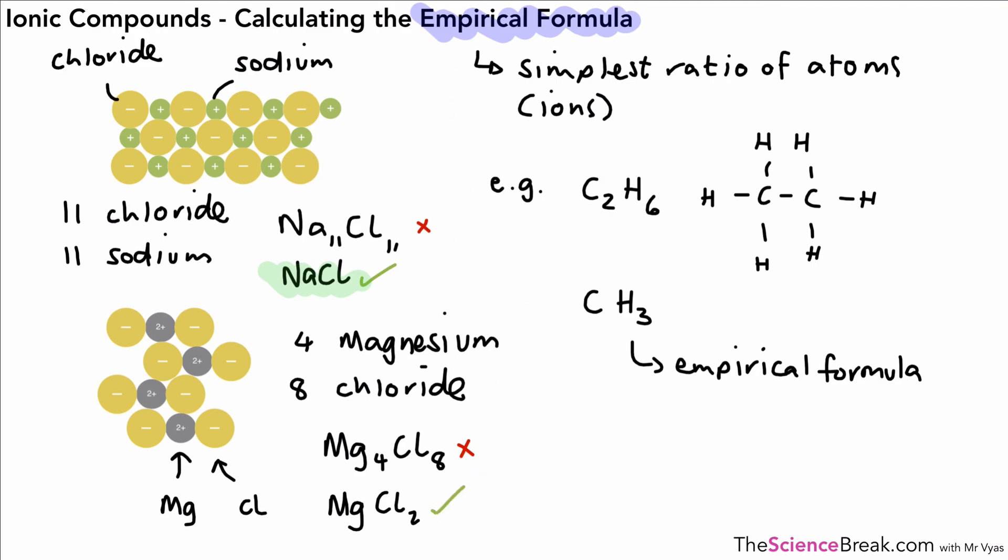So the key here is to remember that the empirical formula means the simplest ratio of atoms or ions in the diagram that you're seeing. It'd be a question of working out the number of ions of each substance you have and working out the simplest ratio. So that's two things we've covered: the limitations of the different types of diagram for ionic compounds and the empirical formula. We have just one more video to do for ionic compounds, but other than that for this video we're all done. Thank you for watching, and I'll see you in the next one.